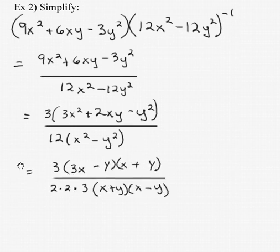Continuing to factor, if we factor the numerator by trial and error, that's going to give us 3x minus y times x plus y, and 12 is 2 times 2 times 3, and the difference of two perfect squares, x squared minus y squared, factors into the conjugates x plus y, x minus y.